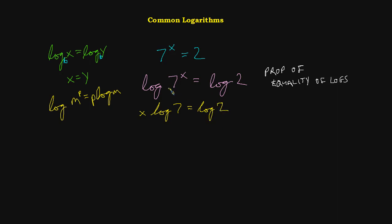Now, you'll notice that when I wrote these logs here, I didn't put any number for the base. That means that we're going to assume they're common logs and they're base 10. So the next thing that I'll do is I'm going to go ahead and divide both sides of this equation by log of 7.